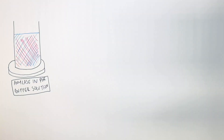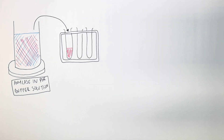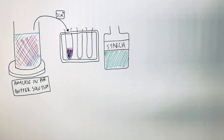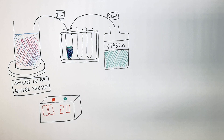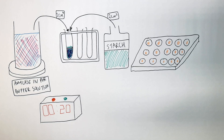Now repeat the experiment for a different pH. This time, mix the amylase enzyme in a pH1 buffer solution using the same volumes as before, as these are control variables. Transfer two centimeters cubed of the amylase in pH1 buffer solution into a test tube, then add two centimeters cubed of the starch solution.